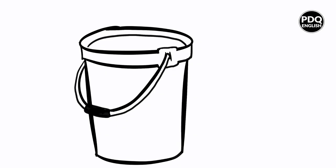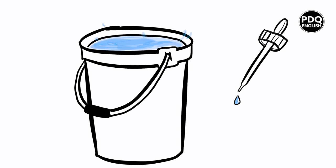So here is a bucket. Now, imagine that you need to fill this huge bucket with water, but all you have is a tiny dropper. This tiny dropper full of water would be like a drop in a bucket in comparison to the overall amount of water that you need. So, a drop in a bucket is used to describe something very small and insignificant in the big picture.